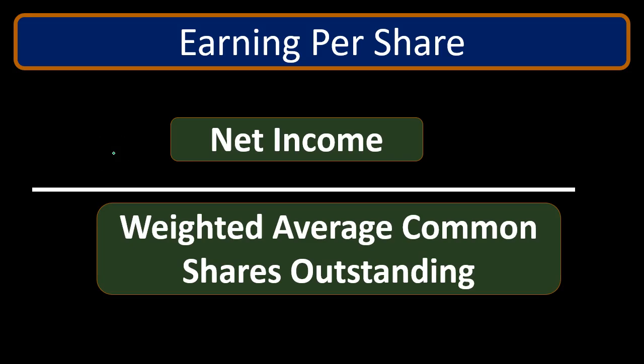Net income reflects how the company did over the time period, whether that be a month or a year. We divide by the shares outstanding. We use the weighted average to find how many shares are outstanding on average through the time period. If there were no new shares issued, we would take shares at the beginning and end of the period, add them together, and divide by two to get the average shares outstanding at any given time.